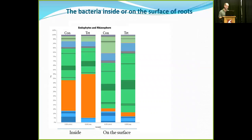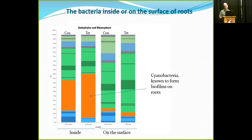Moving inside the plant — the endosphere versus the outside of the root — a large bright orange section turned out to be cyanobacteria. I'm not fully convinced it's all the way inside the plant, because cyanobacteria are known to form biofilms on roots. It may be that I just couldn't clear them all off the outside well enough to separate what's inside from what's outside.